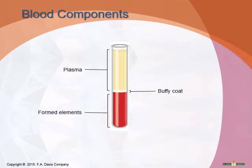If you were to remove those proteins from plasma, it would be known as serum. The next largest component, making up about 45% of the blood, is the formed elements. This includes red blood cells, also known as erythrocytes; white blood cells, also called leukocytes; and lastly, platelets.